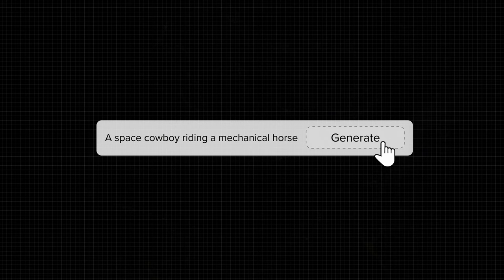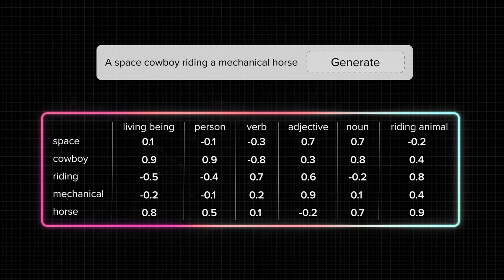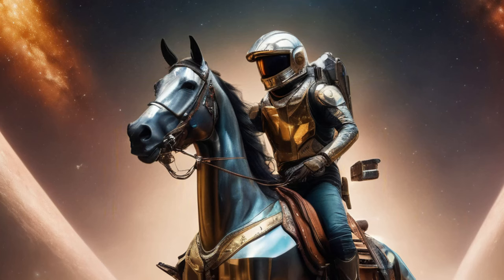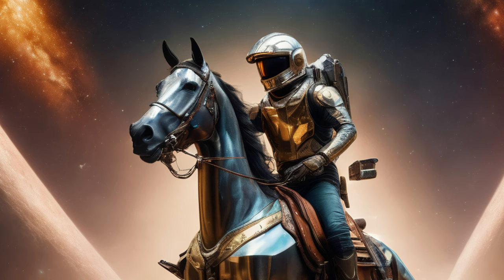So, when you write a prompt into an image generator, the model encodes each word from the prompt into a numerical vector format, capturing their attributes and the relationships between them. This way, the model knows how to illustrate those concepts together.